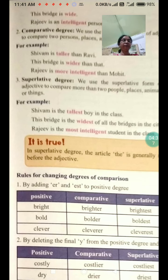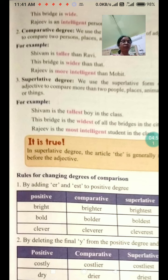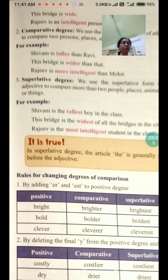Superlative degree. We use the superlative form of an adjective to compare more than two people, places, animals or things. For example: 'Shibam is the tallest boy in the class.' 'This bridge is the widest of all the bridges in the city.' 'Rajiv is the most intelligent student in the class.' In the superlative degree, the article 'the' is generally used before the adjective.